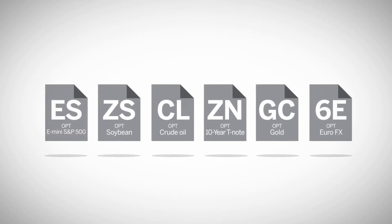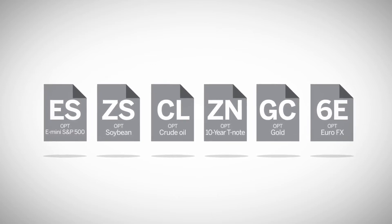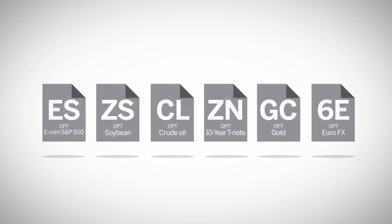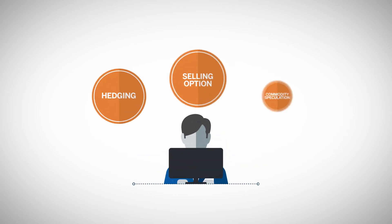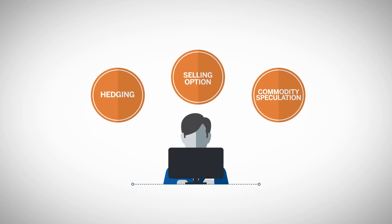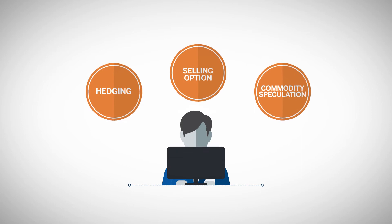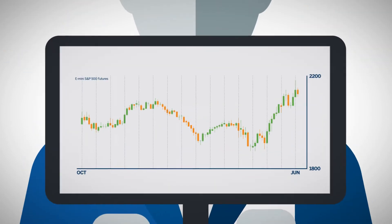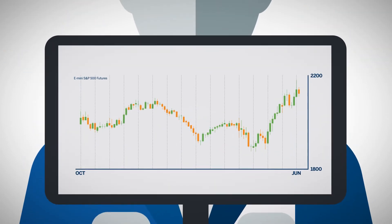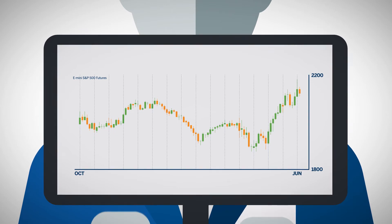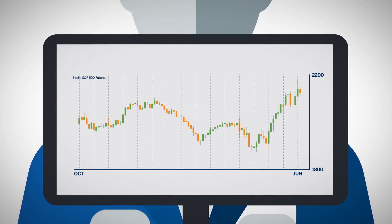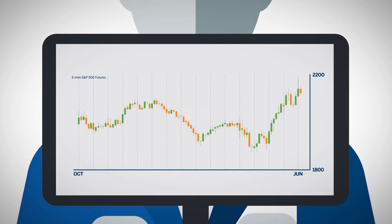Option contracts span a variety of asset classes, from interest rates to equities to foreign exchange and physical commodities. Whether you are hedging a commodity position, writing options as a seller, or speculating on a particular commodity, the historical price action of the underlying futures contract will provide color for the expected volatility, which is part of what drives the value of an option.